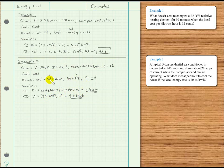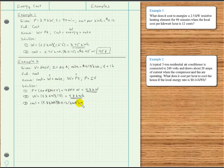Now that we have energy, we can find the cost: 4.8 kilowatt hours times the rate of 0.14 dollars per kilowatt hour. The kilowatt hour units cancel, and 4.8 times 0.14 equals approximately 0.672 dollars. Note: the rate used was 14 cents as given. That comes out to about 67.2 cents.